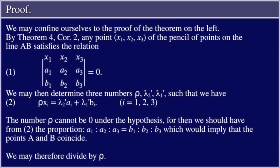Proof: We may confine ourselves to the proof of the theorem on the left. By Theorem 4 Corollary, any point (x₁, x₂, x₃) of the pencil of points on the line AB satisfies the relation — Equation 1 — the three-by-three determinant, read by columns: x₁, a₁, b₁; x₂, a₂, b₂; x₃, a₃, b₃; equals zero. We may then determine three numbers ρ, λ₂′, λ₁′ such that Equation 2: ρxᵢ = λ₂′aᵢ + λ₁′bᵢ, for i equal to one, two, and three.